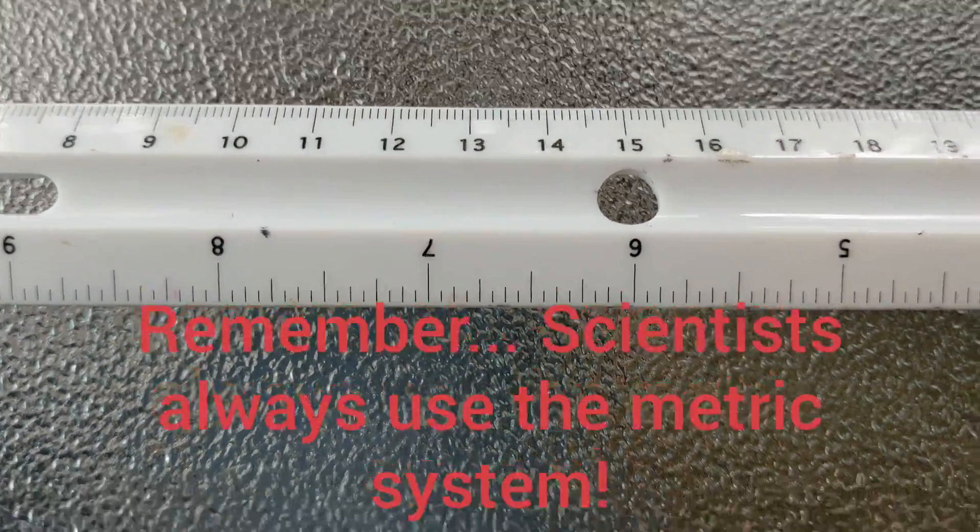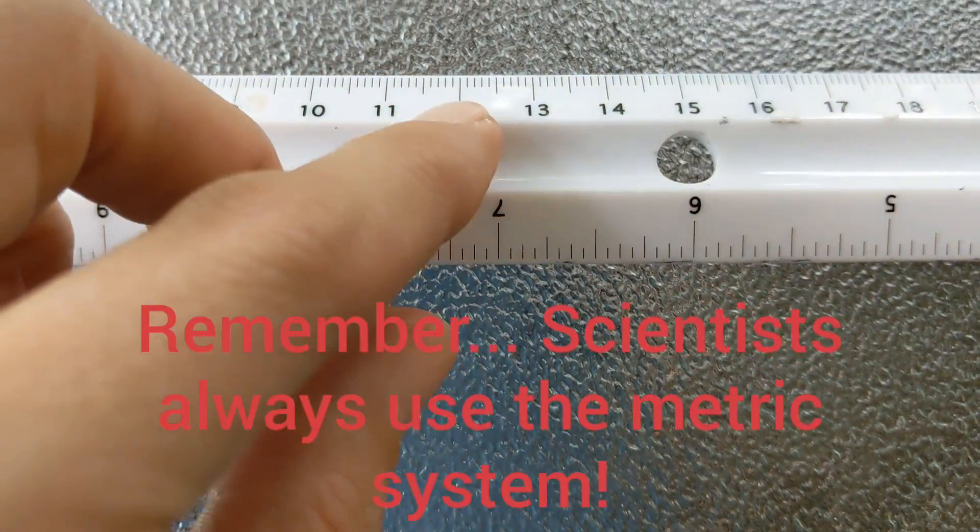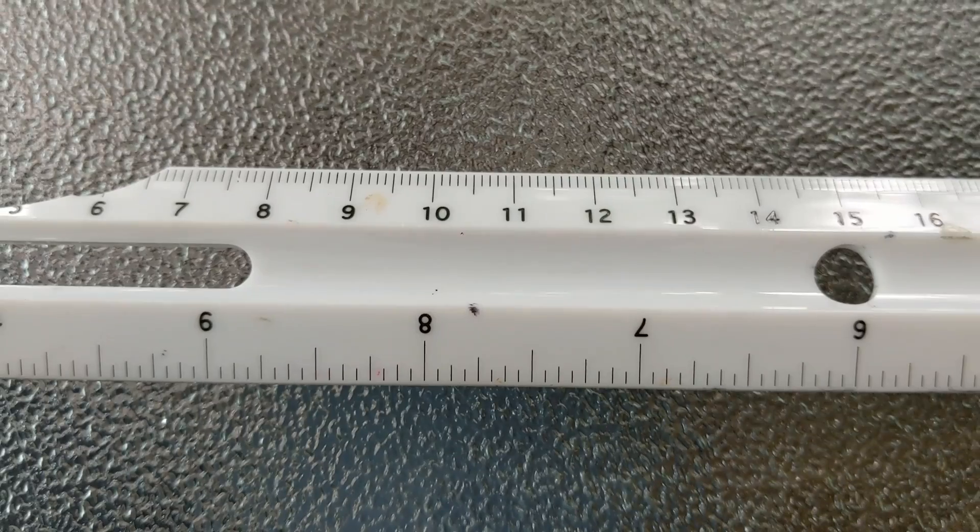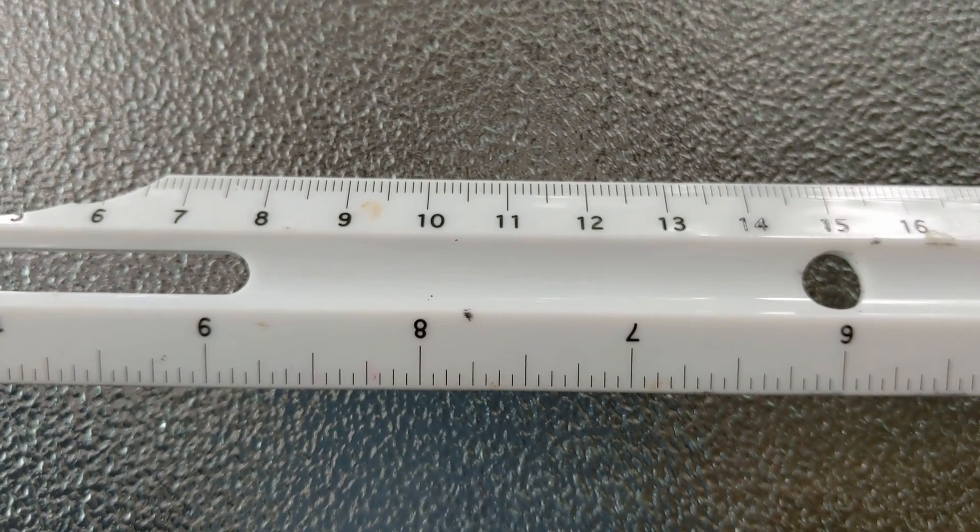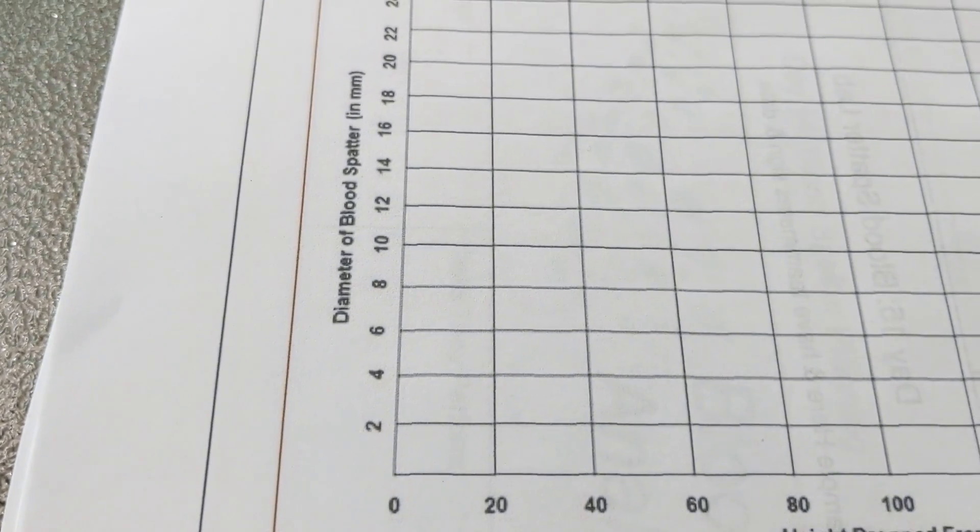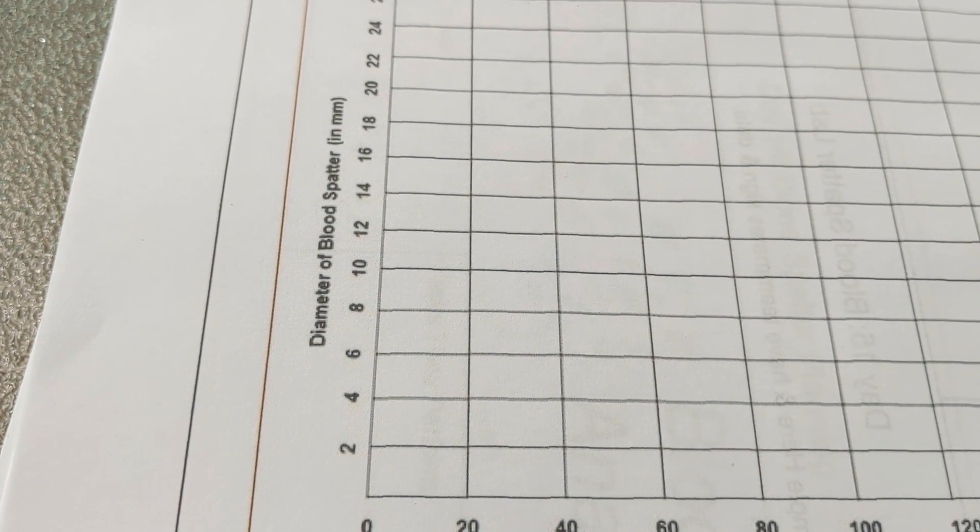Our ruler measures in centimeters if you look at the big numbers, and the little lines in between are the millimeters. Because the blood droplets are on the smaller side, we're going to measure them in millimeters rather than centimeters. That's also because on our y-axis, it's asking for the measurements in millimeters.